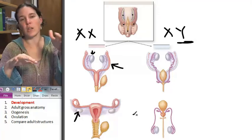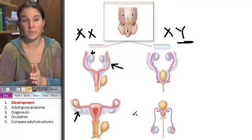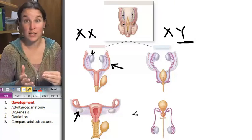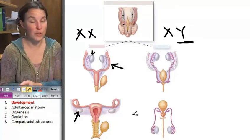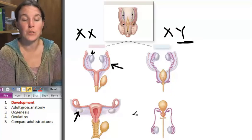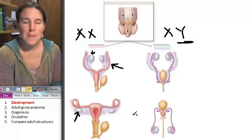All right, so we're going to talk about the gross anatomy of the female, and then we're going to talk about the process by which we produce eggs. You know how the fellas produce sperm,